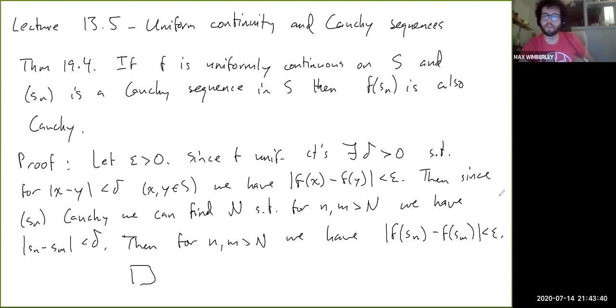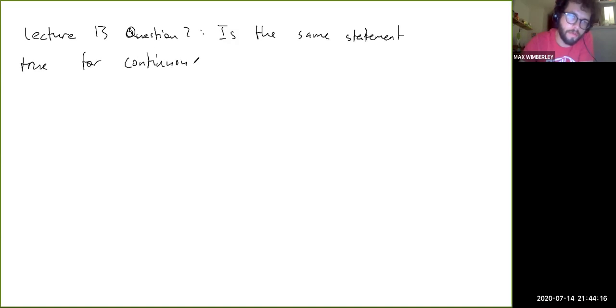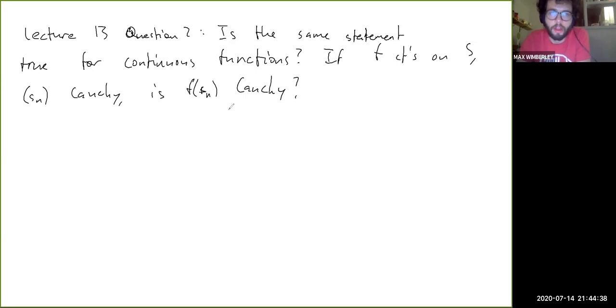this actually lets us very easily prove that certain functions are just not uniformly continuous. Actually, before I do that, I want to give you guys another lecture question. So, sorry, this will be a two-question lecture. So, this is lecture 13, question 2. Is the same statement true for continuous functions? So, if F is continuous on S and SN is Cauchy, is F of SN Cauchy? Okay, so take a minute to think about it, write your answer down, and when you unpause the video, I'll solve this.